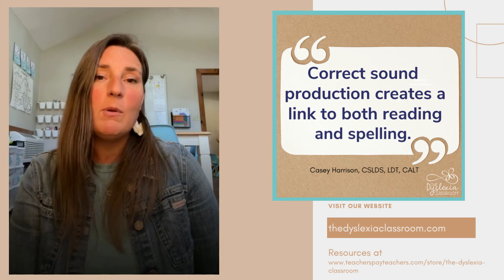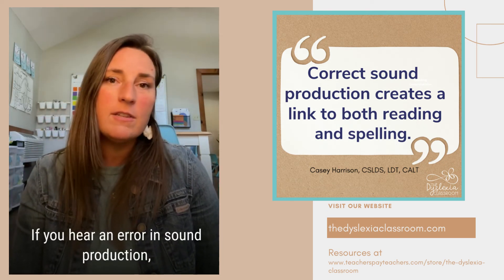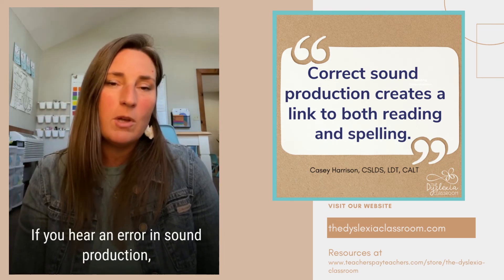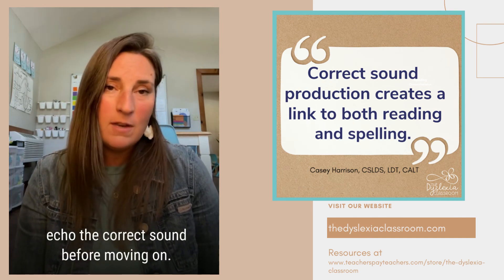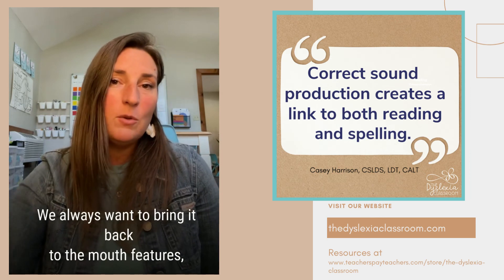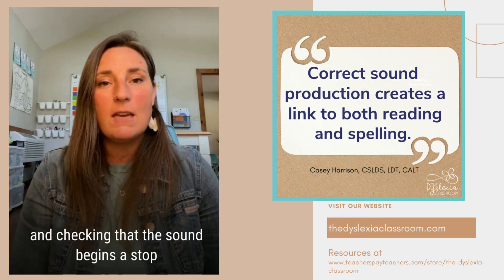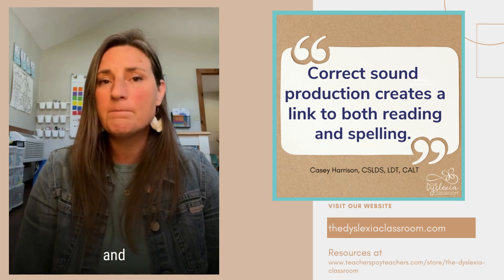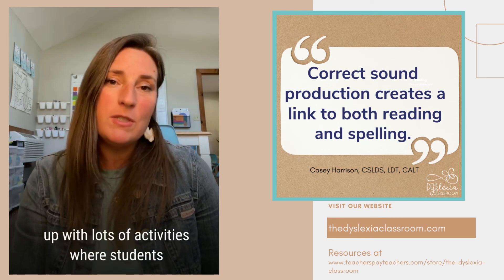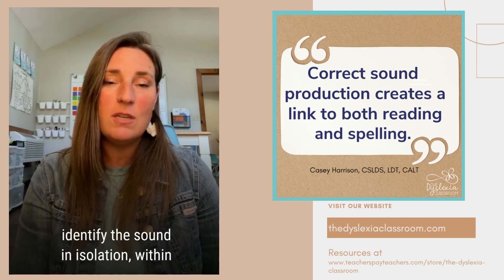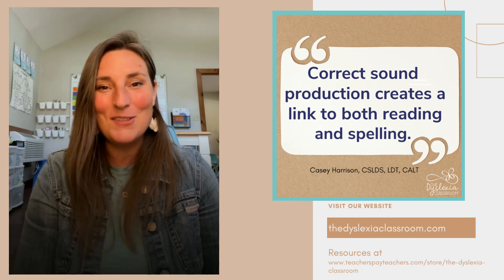We want to keep our sounds in their purest form and isolation. If you hear an error in sound production, model the correct sound and have students echo it right away before moving on. Always bring it back to the formation of the mouth and checking whether the sound starts as a stop and releases as a fricative. Follow up with lots of activities where students identify the sounds in isolation, within words, and connecting to spelling and reading — all those things together.